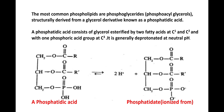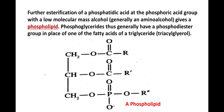Esterification of phosphatidic acid at the phosphoric acid group with a low molecular mass alcohol, generally an amino alcohol, gives a phospholipid. Phosphoglycerides thus generally have a phosphodiester group in place of one of the fatty acids of a diglyceride, i.e. triacylglycerides. Here a phospholipid is given, with R and R' as alkyl groups — this determines the phospholipid's characteristics.